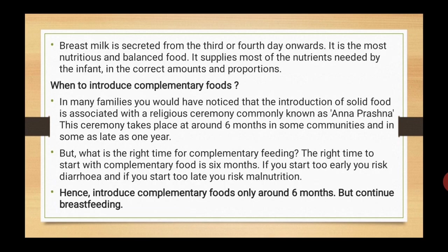Breast milk is secreted from the third or fourth day onwards. It is the most nutritious and balanced food, supplying most of the nutrients needed by the infant in the correct amounts and proportions. The right time to start with complementary food is 6 months. If you start too early, there is a risk of diarrhea, and if you start too late, there is a risk of malnutrition. Hence, introduce complementary foods only around 6 months but continue breastfeeding.